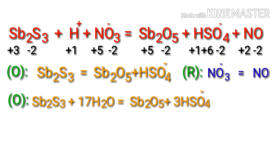The number of atoms in the oxidation half-reaction is balanced. Now you can balance the hydrogen atoms. To balance the hydrogen atoms, you can add H⁺ ions to the other side. The number of atoms in the oxidation half-reaction is now fully balanced.